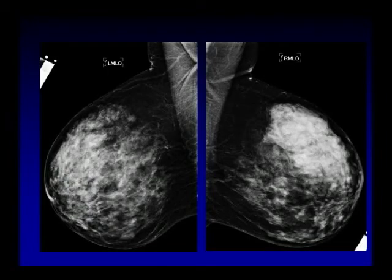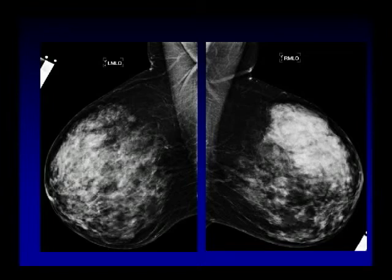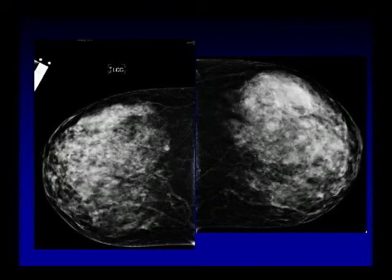When you have screening mammography, we take two views of each breast: the MLO, which is the medial lateral oblique, and the CC, which is the cranial caudal view. These are the medial lateral oblique views. You should look for the labels to tell you which breast it is. These are the MLOs because you have the pectoral muscles coming down. And here are the cranial caudal views.